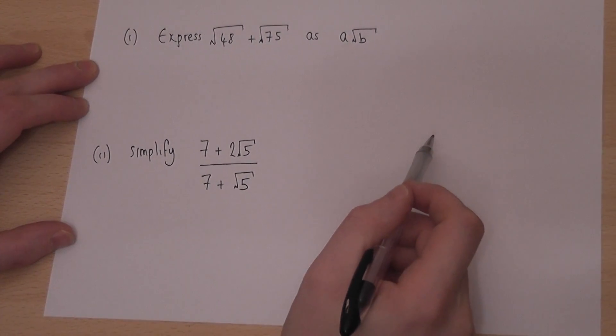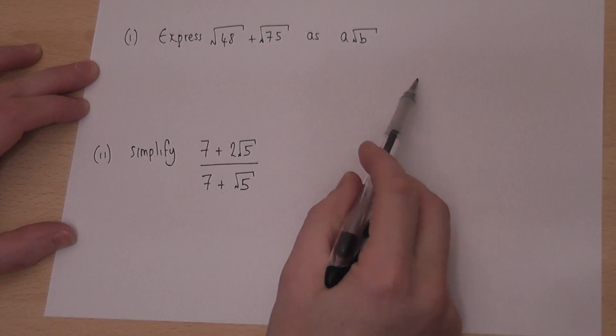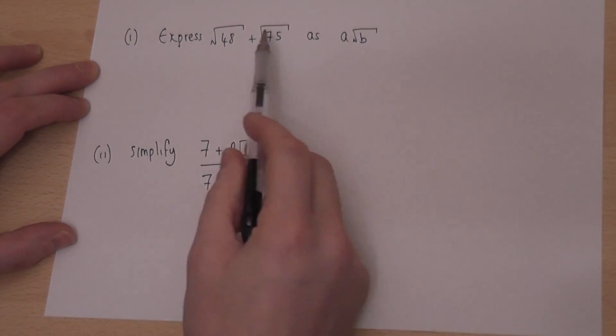This video looks at two fairly routine surd questions. The first one is adding two surds where the number in the square root is different.